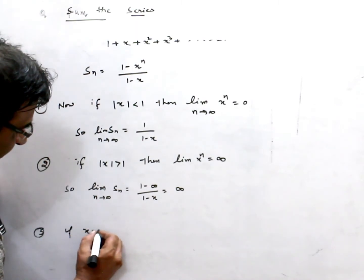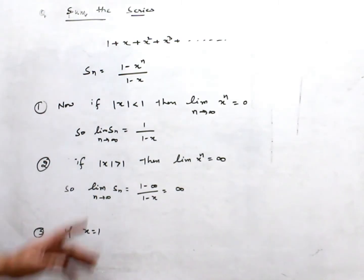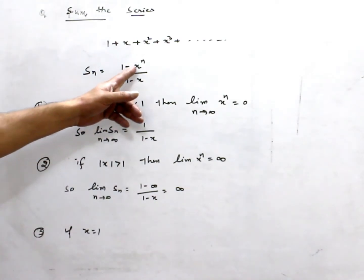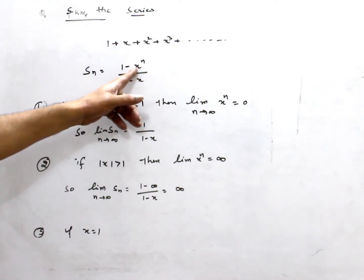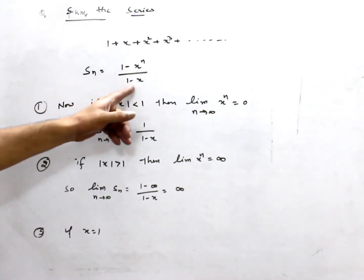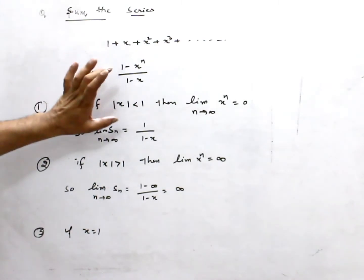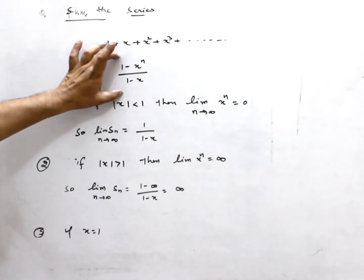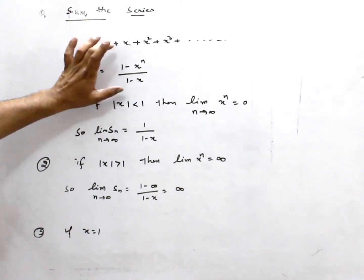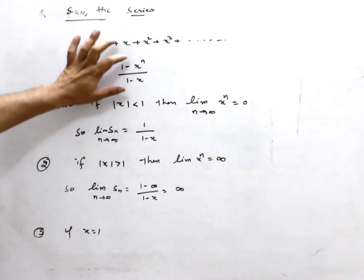If x equals 1, then the numerator becomes 1 minus 1, which is 0, and the denominator is also 0. So we get a 0 over 0 indeterminate form, and we cannot decide the limit directly. Using L'Hôpital's rule, differentiating the numerator gives minus n times x to the n minus 1.